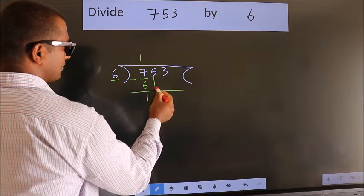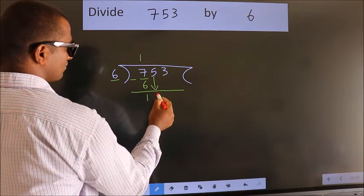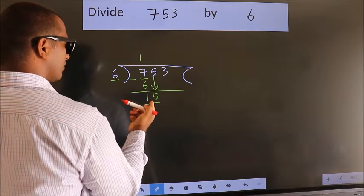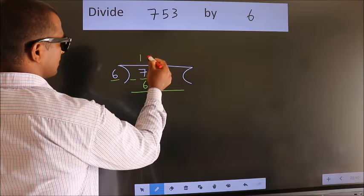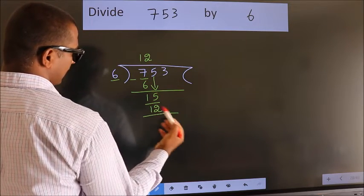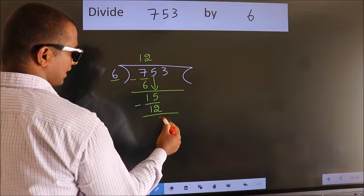After this, bring down the beside number. So 5 down, so 15. A number close to 15 in 6 table is 6 twos, 12. Now we subtract. We get 3.